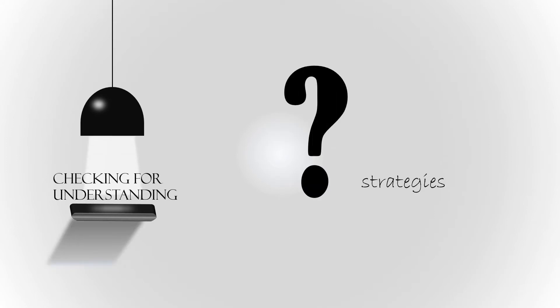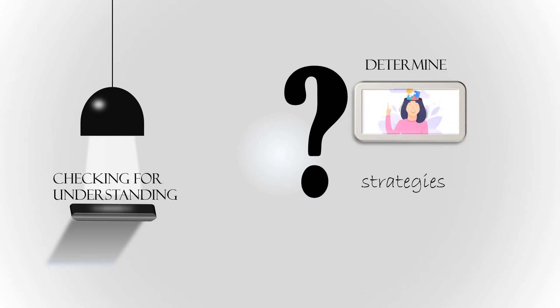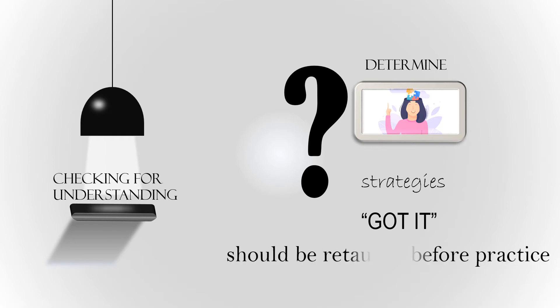Checking for understanding: the teacher uses a variety of questioning strategies to determine the student's understanding. Determination of whether students have got it before proceeding. If there is any doubt that a class has not understood, the concept or skill should be retaught before practice begins.